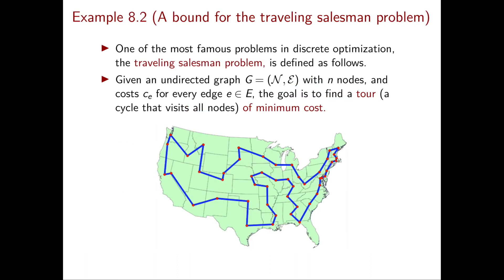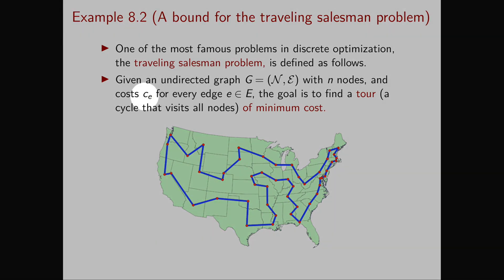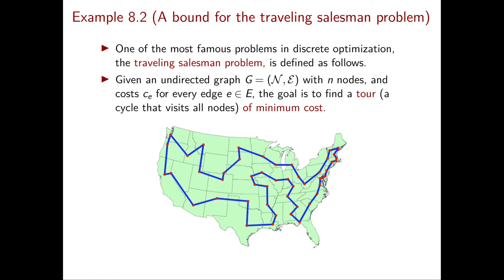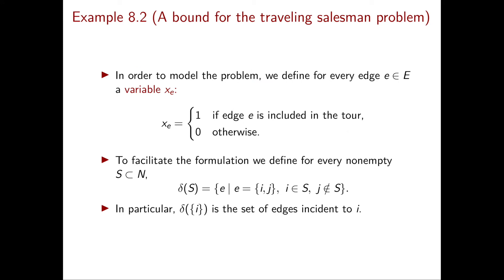Now let's see an example: the traveling salesman problem, one of the most famous problems in combinatorial optimization. We have as input an undirected graph G = (N, E) with n nodes and edge costs C_E. The goal is to find a tour of minimum cost, where a tour is a cycle that visits all nodes. In the picture, we have an example of an optimal tour passing through the 48 continental state capitals, where edge costs are given by the distance between two capitals. We introduce a variable X_E for every edge: X_E equals 1 if edge E is included in the tour, and 0 otherwise.